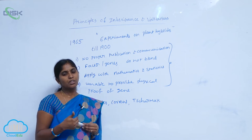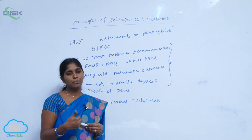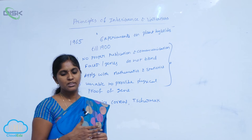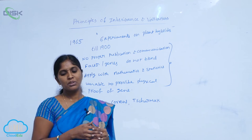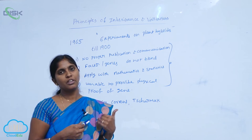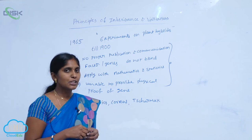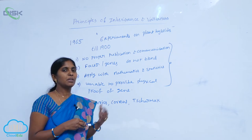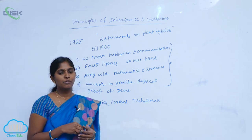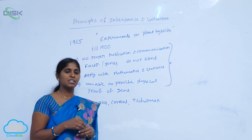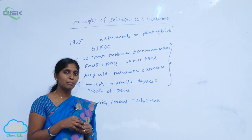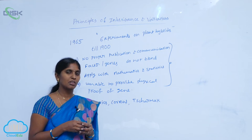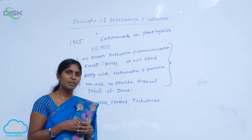They postulated the Chromosomal Theory of Inheritance, which is the combination of Mendelian principles as well as chromosomal behavior. The experimental proof of the chromosomal theory of inheritance was given by scientist T.H. Morgan — Thomas Hunt Morgan.